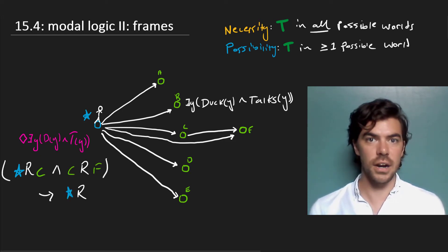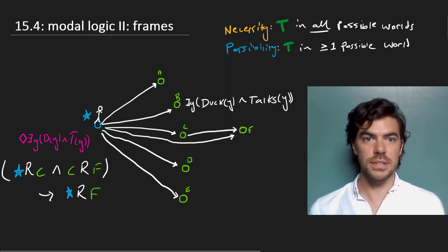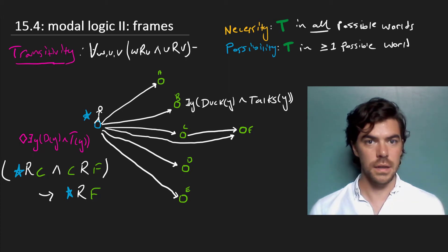That is to say that our R here, our R relation is transitive. More generally, we can say that transitivity holds where, for any worlds, we'll just say for all W, U and V. If W is related to U and U is related to V, then W is related to V.